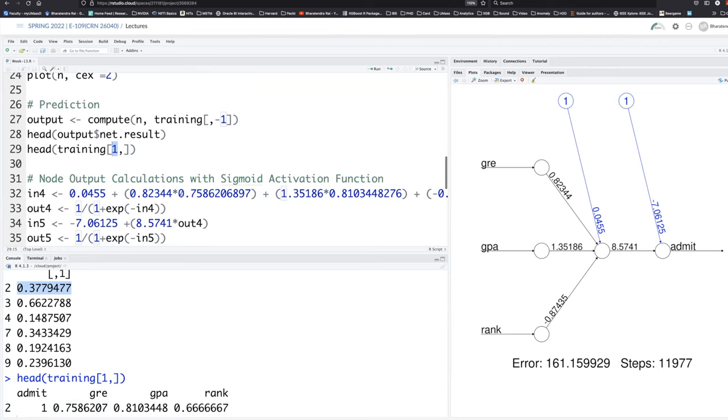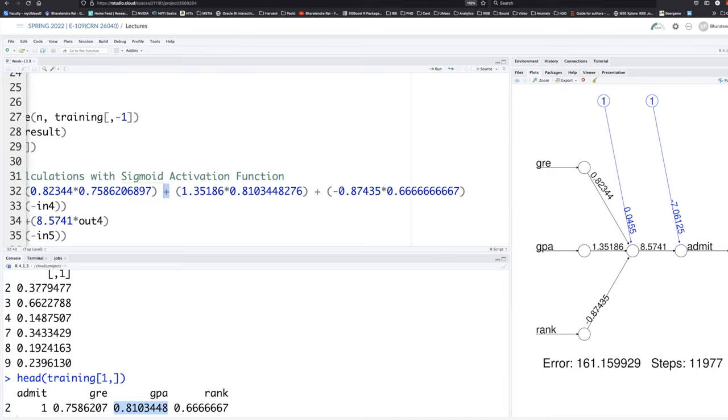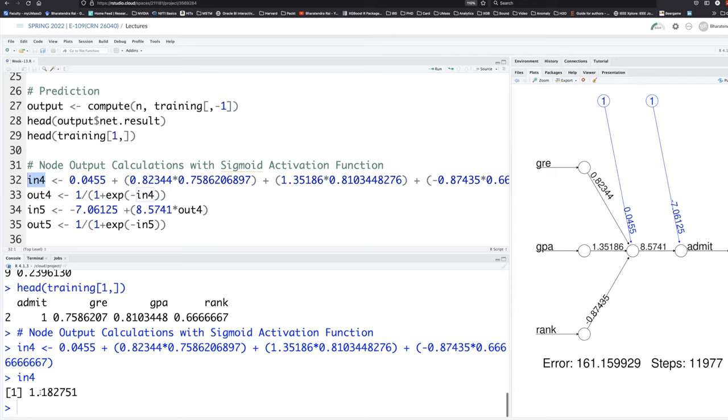So if you call this node as node one, so this is one, this is two, this is three, and this can be labeled as four. So input node four, how the input is calculated? We look at this bias term 0.0455 plus weight of link between GRE and this node is 0.823. So that number multiplied by the actual value that you have for GRE. Plus the next weight you can see is 1.35. So 1.35 times the actual value for the second applicant. And then you have negative 0.87 times the value for the rank.